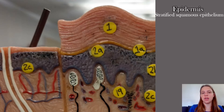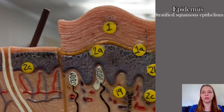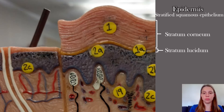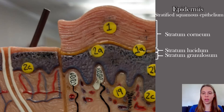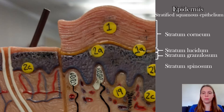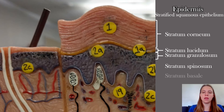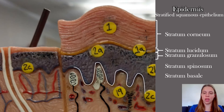The epidermis is made of stratified squamous epithelium. Remember, stratified means having layers. The layers of the epidermis are the stratum corneum, the stratum lucidum, the stratum granulosum — which on this model is indicated by those darker purple dots underneath the stratum lucidum — and underneath the stratum granulosum is the stratum spinosum.